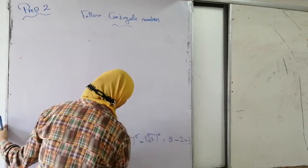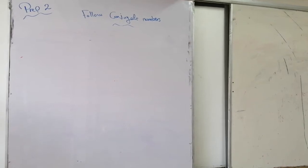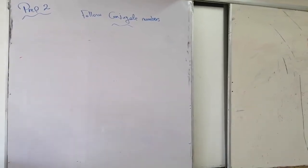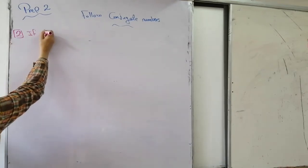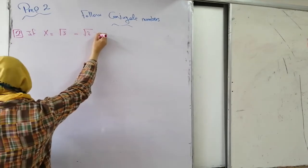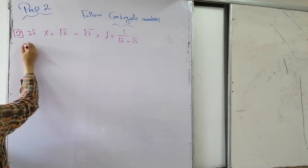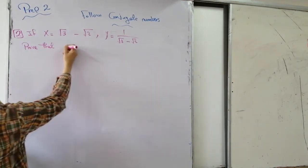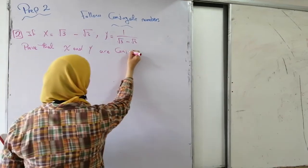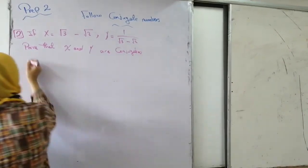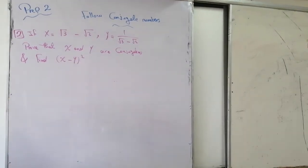Just remember: the sum equals 2 times the first term; the product equals first squared minus second squared. Let's solve another example. If x equals root 3 minus root 2 and y equals 1 over (root 3 minus root 2), prove that x and y are conjugate, and find (x minus y) all to the power 2.